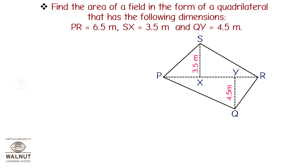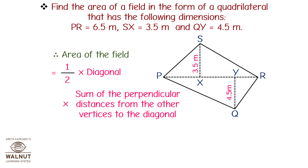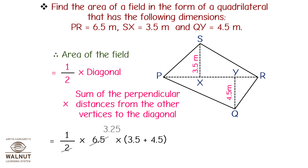Find the area of a field in the form of a quadrilateral with the following dimensions: PR equals 6.5 meters, SX equals 3.5 meters, and QY equals 4.5 meters. Therefore, area of the field equals half into diagonal into sum of the perpendicular distances from the other vertices to the diagonal.